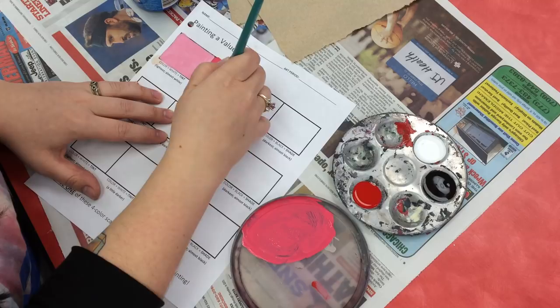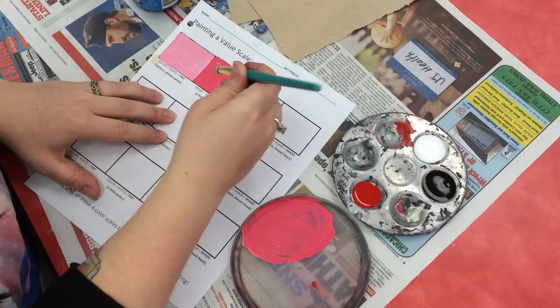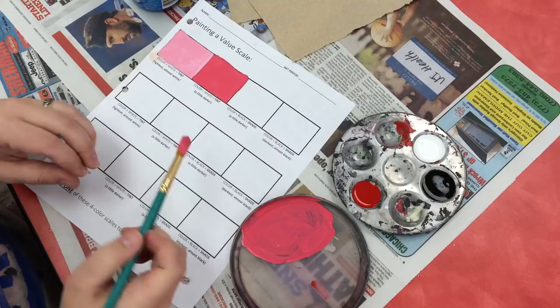If you were doing a larger value scale with more than four color changes, you would have to be a little bit more careful about how much you mix, so that you get more distinct shades. In this case, we only need two different tints there.